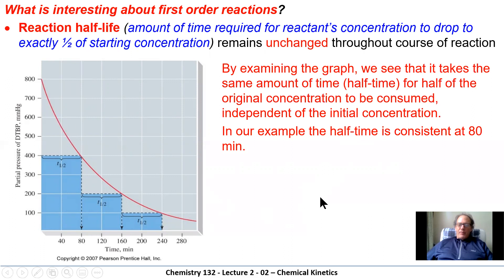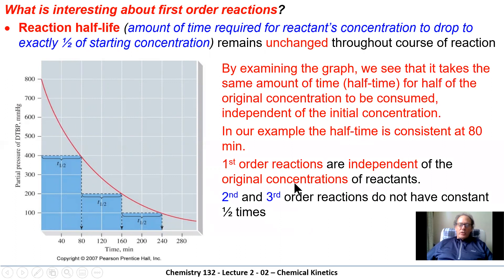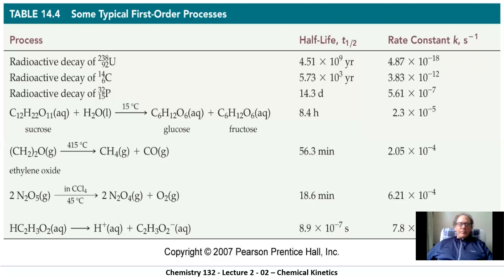The half-life on this graph is consistent at 80 minutes. First order reactions are independent of the original concentrations. For second and third order reactions, we don't have constant half-times. So if you see a curve where the half-life is the same throughout, you can determine it is a first order reaction. Other methods exist to identify zeroth, second, or third order reactions, and we'll look at those later.